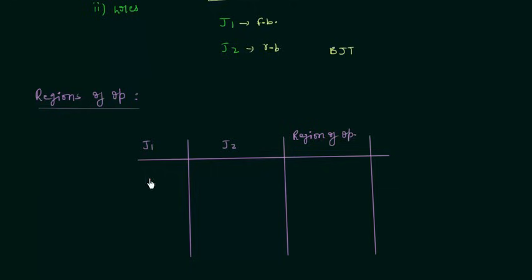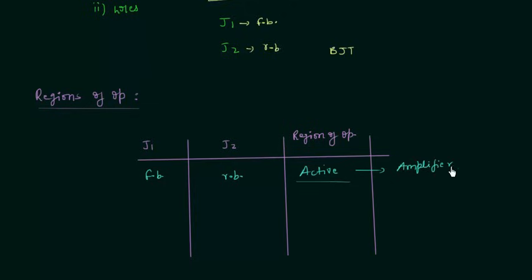When junction J1 is forward biased and junction J2 is reverse biased, the region of operation is the active region. When the transistor is in active mode, it operates as an amplifier. When junction J1 is forward biased and junction J2 is also forward biased, the transistor is in saturation mode, which corresponds to logical ON or a closed switch.